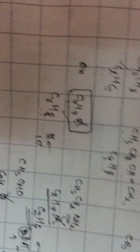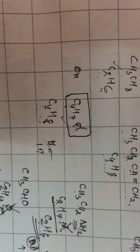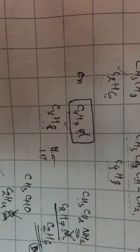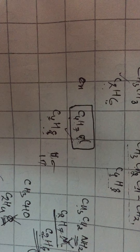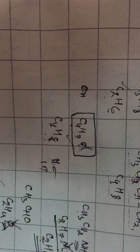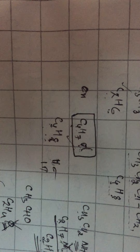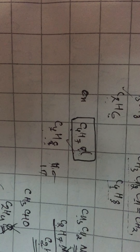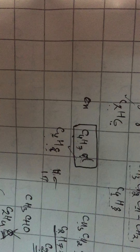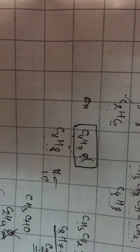So we have worked out how to calculate the degree of unsaturation, also called the double bond index. This idea is very important to work out what are called isomers, which we will see later.